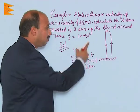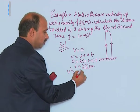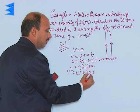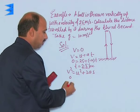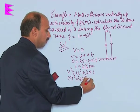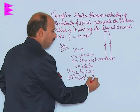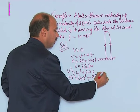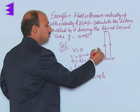Now, what is this maximum height? We can use V squared equals u squared plus 2as. So we get 0 squared equals 25 squared plus 2 times minus 10 times h, where h is height.